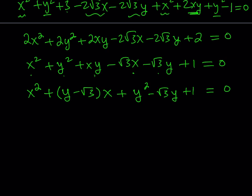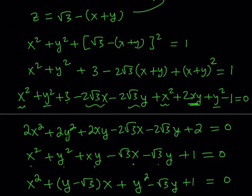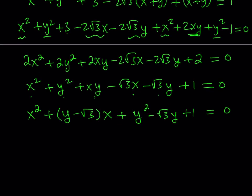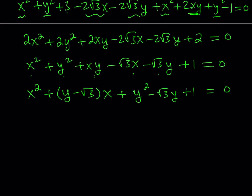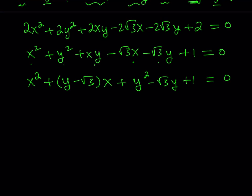Why did I do this for x? It doesn't really matter because of the symmetry — whatever I did for x, I could be doing for the other variables as well.